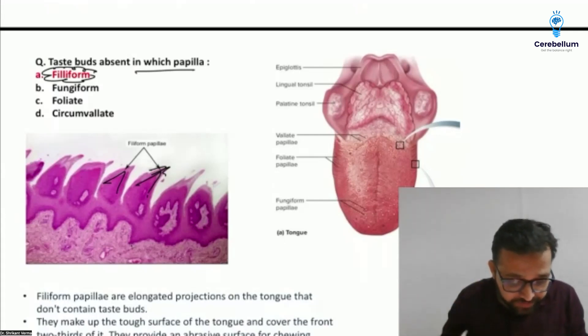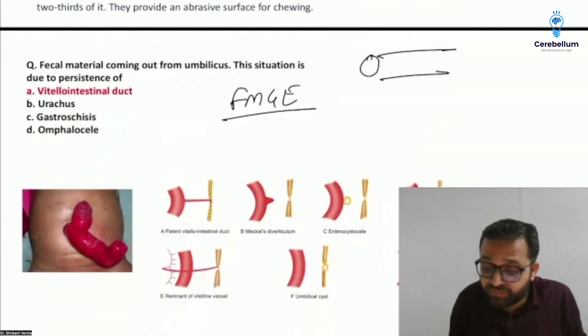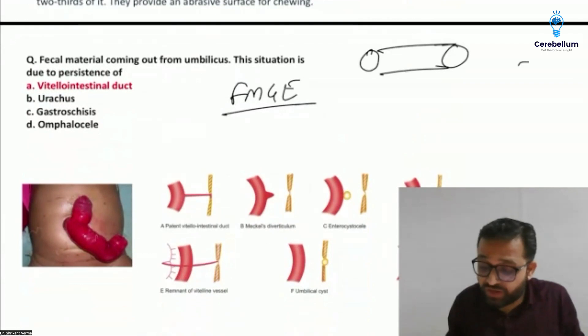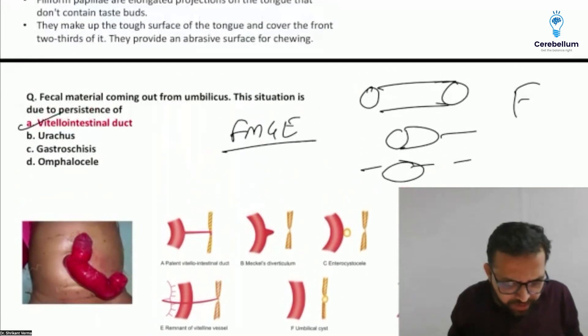Next question: fecal material coming out from the umbilicus. This is actually a question from the FMGE asked in 2021. When we see any kind of abnormal embryonic opening which is persistent, the opening is a fistula. One opening then sinus, no opening then cyst. According to the given option, the answer is vitelline intestinal duct. Please inform if any improvement is there, if any question or option is separate. These all are the recall basis.